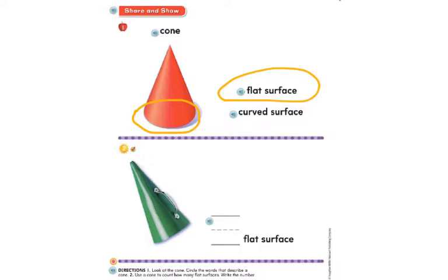Also, does our cone have a curved surface? Yes, it does. Remember I said that if you put it on its side, it would roll. We do have our curve. We do have our curve in our cone. So we're going to circle curved surface.